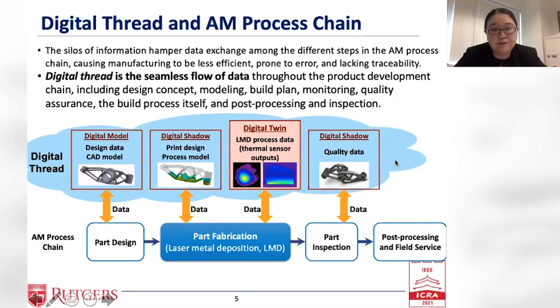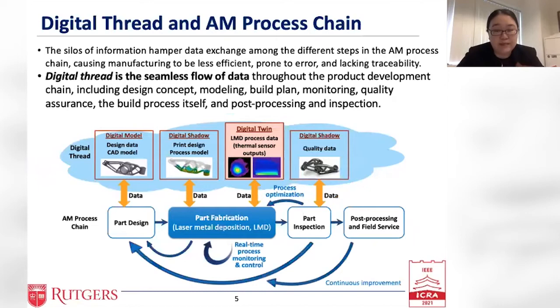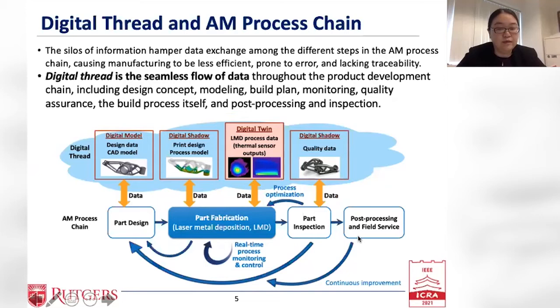The ability to understand and apply massive amounts of data and intense computing demands within the digital thread allows us to enhance and scale AM capabilities and manage the complexity of AM production. By collecting and analyzing detailed logs of real-time data from process monitoring, it's possible to recognize patterns which reveal where potential defects might occur and where process adjustments may be beneficial. Based on analysis from the digital thread, we might come up with decisions leading to process optimization, real-time process monitoring, control, or continuous improvement — connecting to a feedback loop.